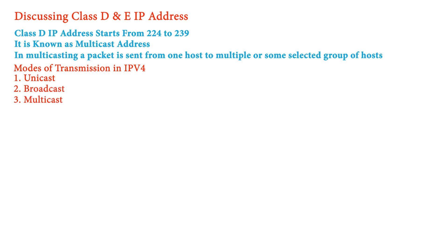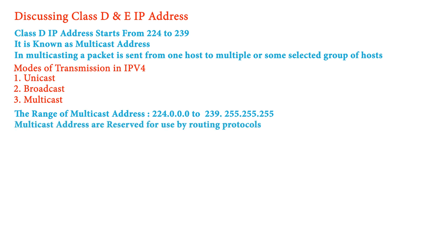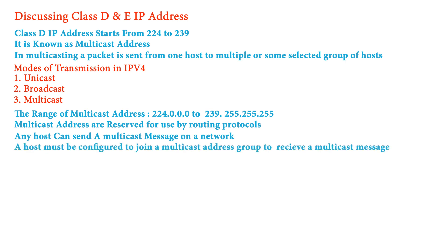In IPv4 communication there are three main modes of transmission: unicast, broadcast, and multicast. We will discuss these in later lessons. The multicast address ranges between 224.0.0.0 and 239.255.255.255, reserved for use by routing protocols inside a network. Any host can send and receive multicast datagrams, but to receive a multicast message a host must be configured to join that multicast address group, becoming part of a multicast group.